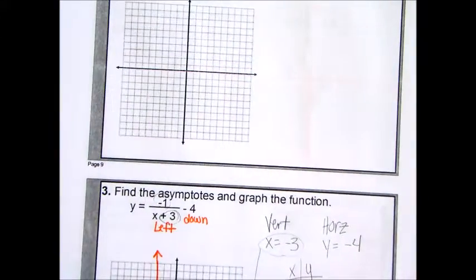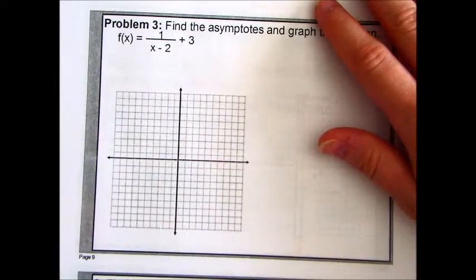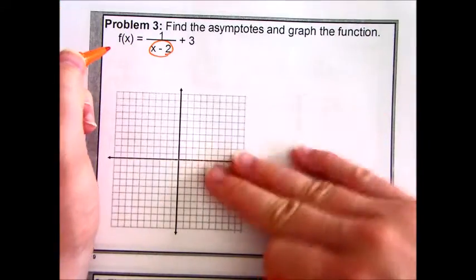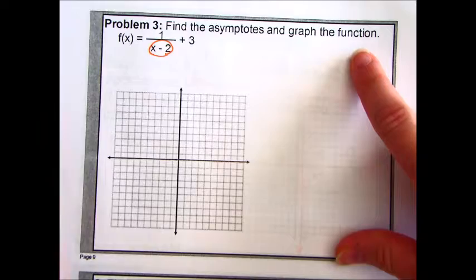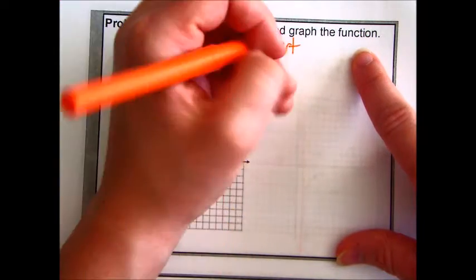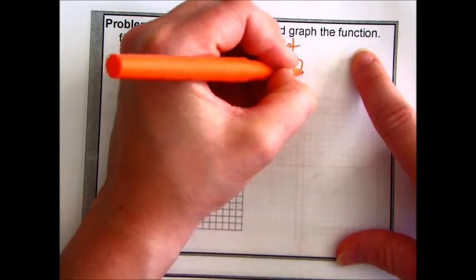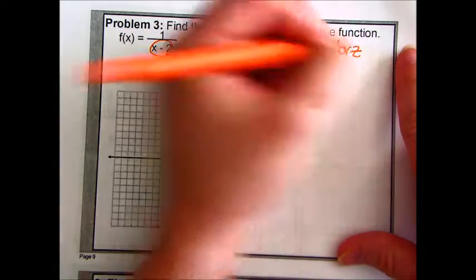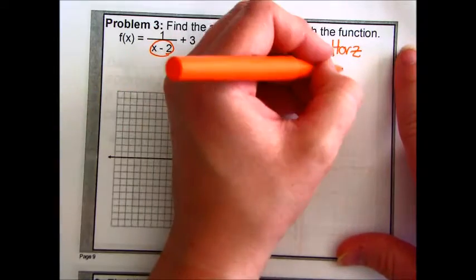Before we move on to the next set of problems, I just want to make sure that I indicate something for you. This one is a minus 2. We're not going to graph it. I just want you to know that the vertical asymptote would be x equals positive 2. And I want you to see this plus 3 in the back and understand that means it would have a horizontal asymptote of y equals 3.